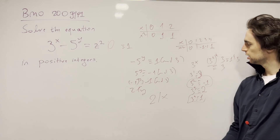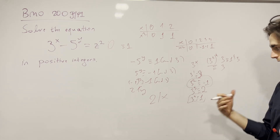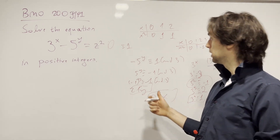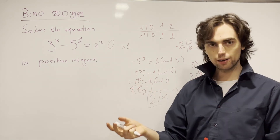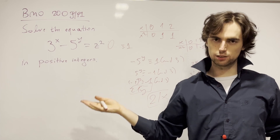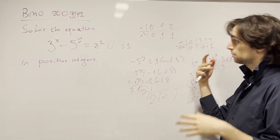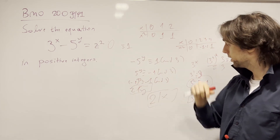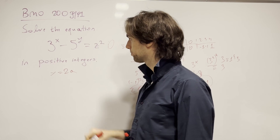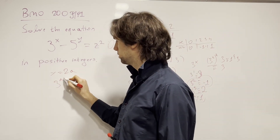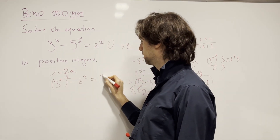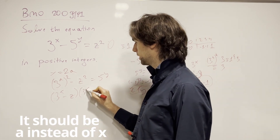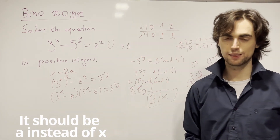So now we have both results, and we'll use a difference of squares approach. Since 2 divides x, we write x = 2a for some integer a. Then our equation becomes 3^a squared minus z squared equals 5^y, which we factor as (3^a − z)(3^a + z) = 5^y. What do we do with this? Well, we have a product equal to a power of 5.